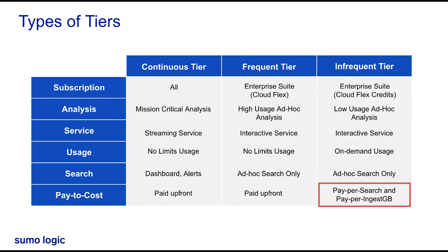The takeaway here is because our data is not created equally, the value that we're getting out of it is going to differ, and ultimately we need to decide what that value is. SumoLogic licensing tiers help us solve that problem by giving us the right flexibility to match the value we're getting from the data. I hope this helps you get started with the data tiers available in SumoLogic. Thank you for joining.